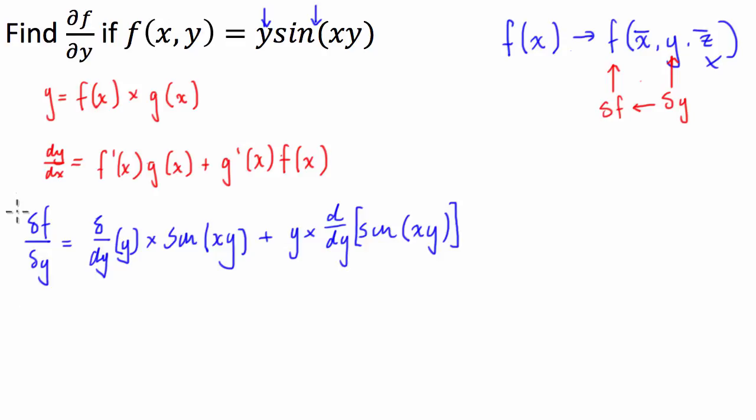So let's just change color. So the derivative of just y with respect to y, so we have δf/δy, this first one is just going to be 1. So we have 1 times sine of xy, so we're just left with sine of xy, and then we have y, we can just put that back,